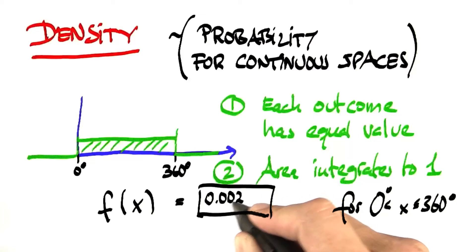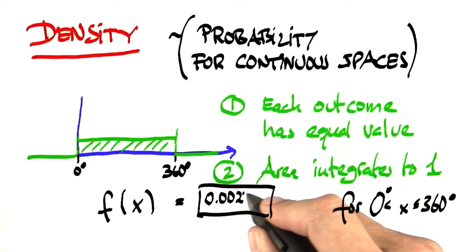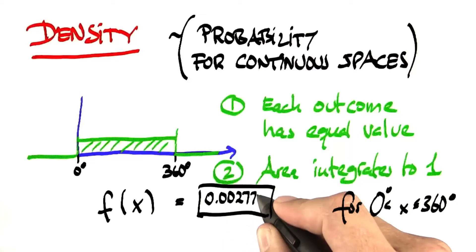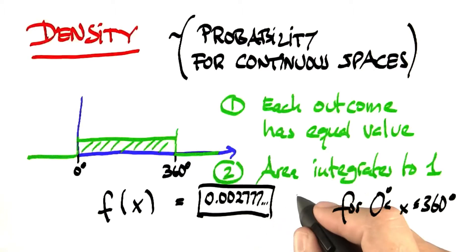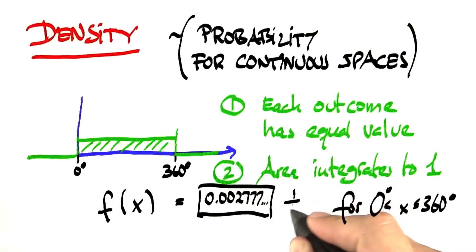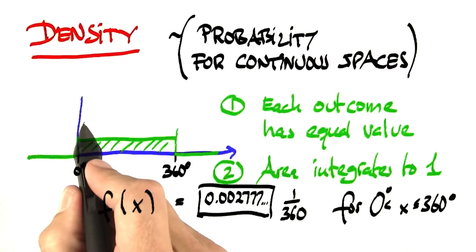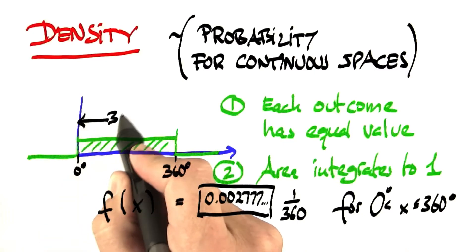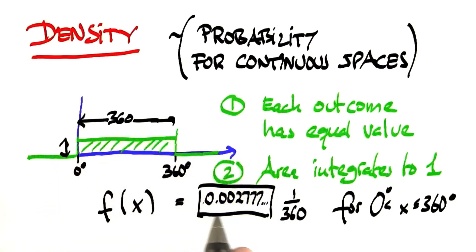And the answer is, again, 0.002777 and so on, which is the same as 1 over 360. And the way to see this is that the width of this interval over here is 360. We didn't know the height, which is what I asked you to guess.